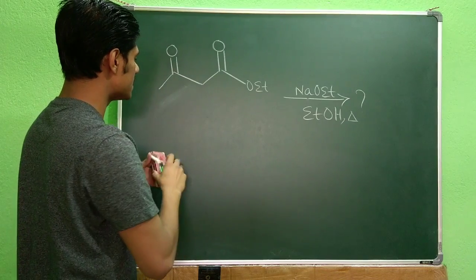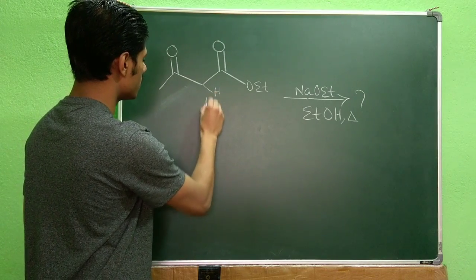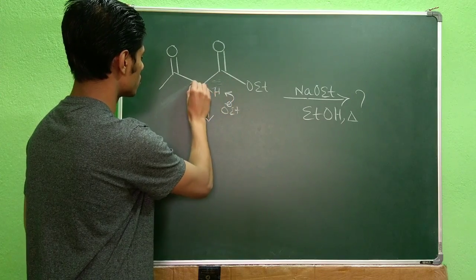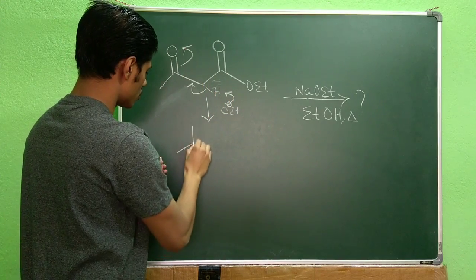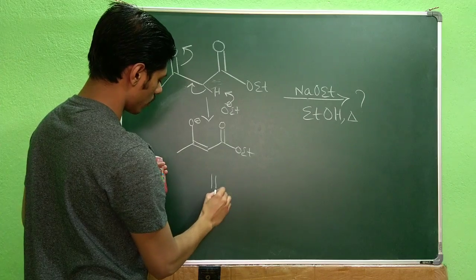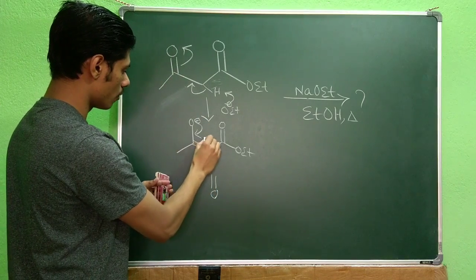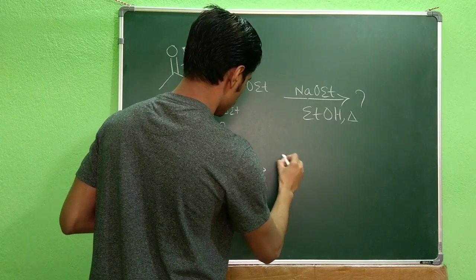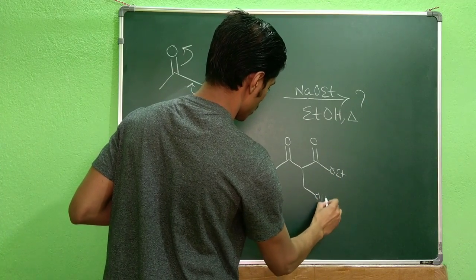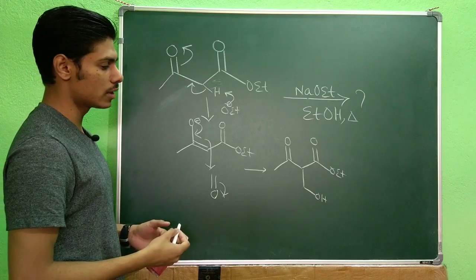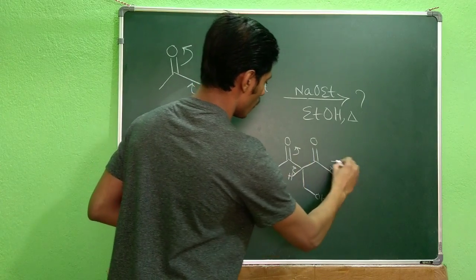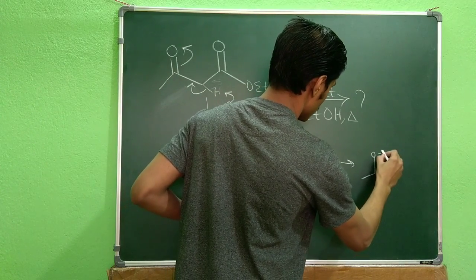The first step you can very easily predict is: ethyl acetoacetate is active, so your base, sodium ethoxide, will deprotonate it. This deprotonation will produce an enolate, and now you have formaldehyde. If you are familiar with the aldol condensation reaction, a very similar thing will happen here — a second deprotonation will give you a particular enolate.